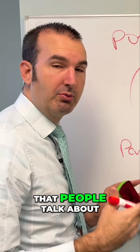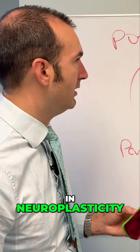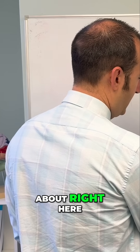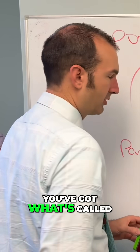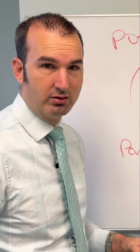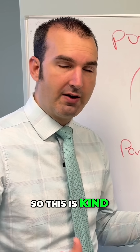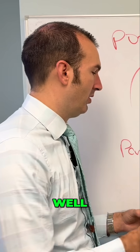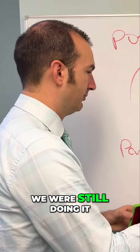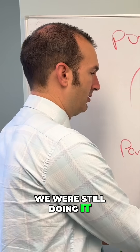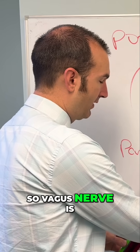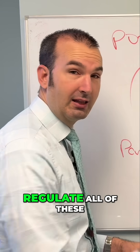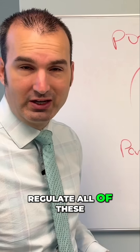One of the things that people talk about in neuroplasticity is right here — what's called your vagus nerve. This has been all the hype the past couple of years, but before the hype, we were still doing it. The vagus nerve is actually what helps to regulate all of these.